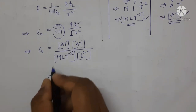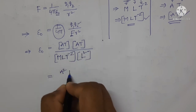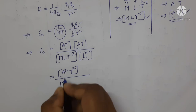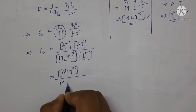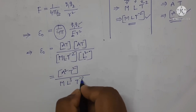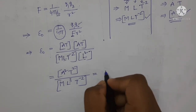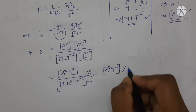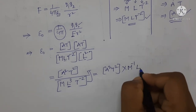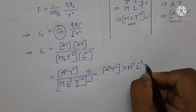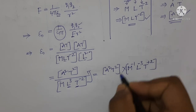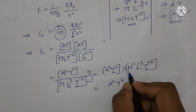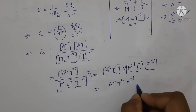Now simplify this. A into A gives A square; T into T gives T square. Here M, L, and L square is there — so L cubed — and it is T power minus 2. Further simplify: A square T square in the numerator. Writing in the numerator gives M power minus 1, L power minus 3, and T power minus 2 becomes T power plus 2. Further simplifying: T power 2 and T power 2 becomes T power 4, with M power minus 1 and L power minus 3.